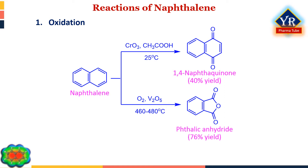Naphthalene is much more easily oxidized than benzene. It is oxidized with chromium trioxide in acetic acid at room temperature, giving 1,4-naphthaquinone. In another reaction, oxidation of naphthalene by oxygen in the presence of vanadium pentoxide destroys one of the two rings and yields phthalic anhydride. Because of the availability of naphthalene from coal tar and the large demand for phthalic anhydride, this is an important industrial process.